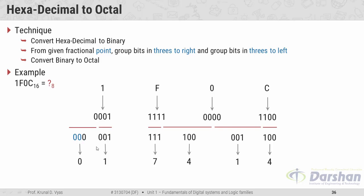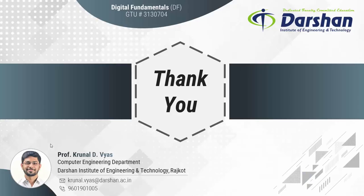000 → octal digit 0, 001 → octal digit 1, 111 → octal digit 7, 100 → octal digit 4, 001 → octal digit 1, and 100 → octal digit 4. So our final answer: 1F0C in hexadecimal is converted to 17414 in octal. You don't need to write the leading 0 as a starting digit because it has no meaning. Thank you.